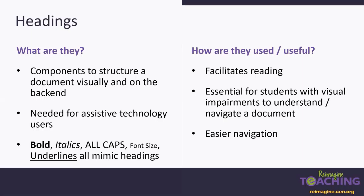For somebody who is blind, they don't know how all this text relates to each other unless their technology tells them: this is a heading, this is a bulleted list, this is a paragraph, this is an image, this is a table, etc. Sighted people take for granted that we just get the structure of something because our eyes communicate very quickly to our brain — oh, there's two columns, this is the main topic, these are the three bullet points she's going to cover. We can do that with our eyes, but somebody needs to be able to do that same type of thing with their technology.